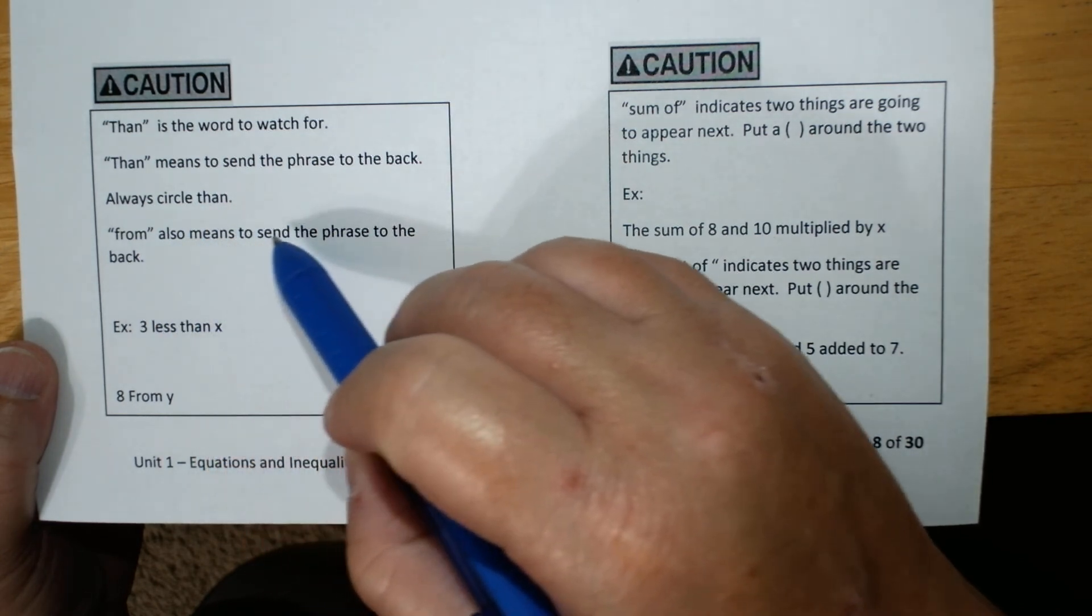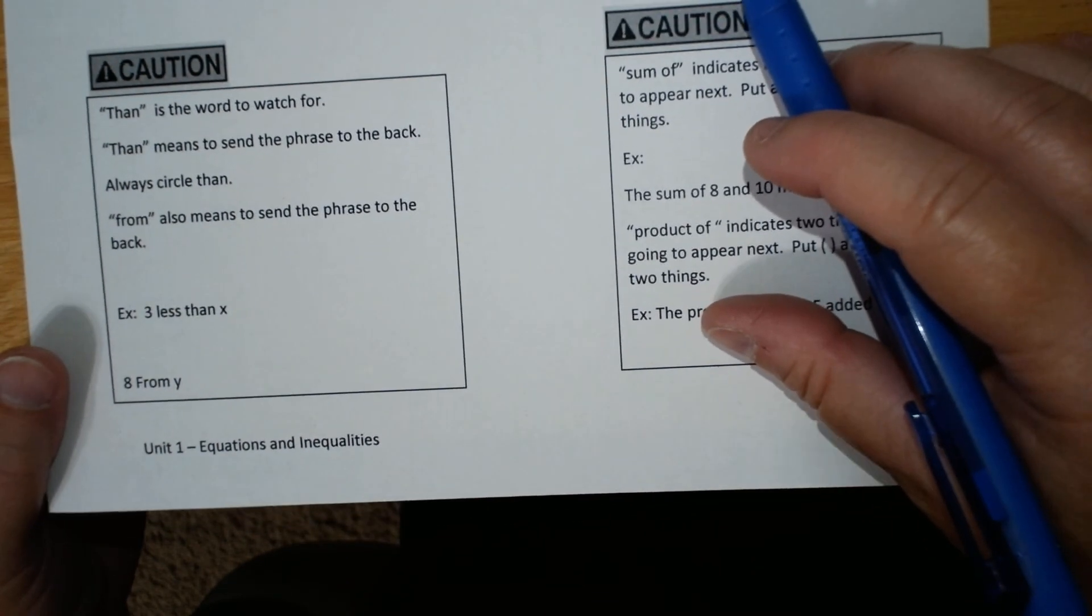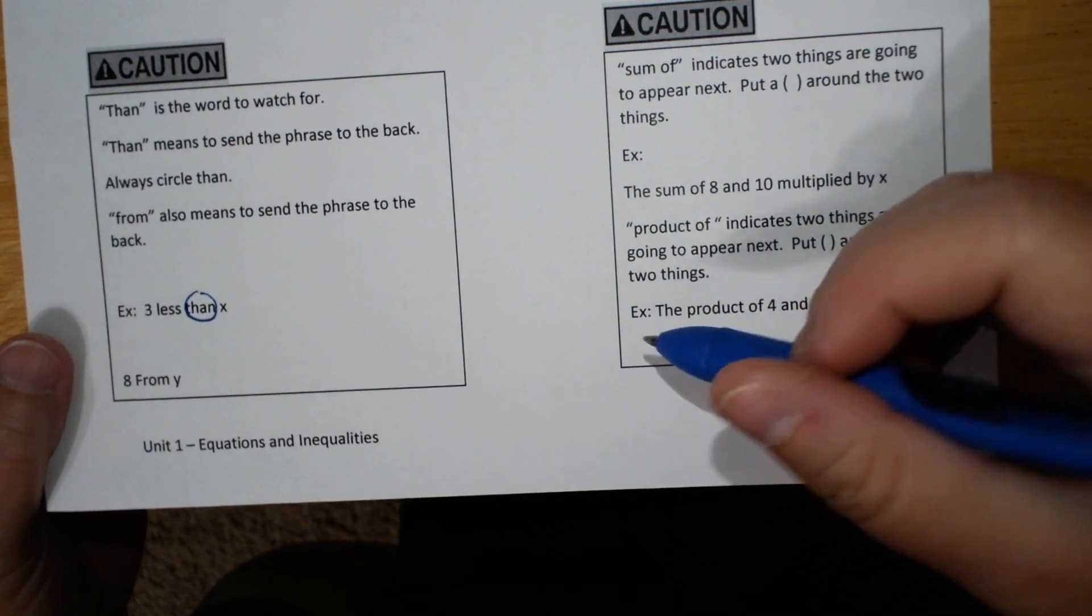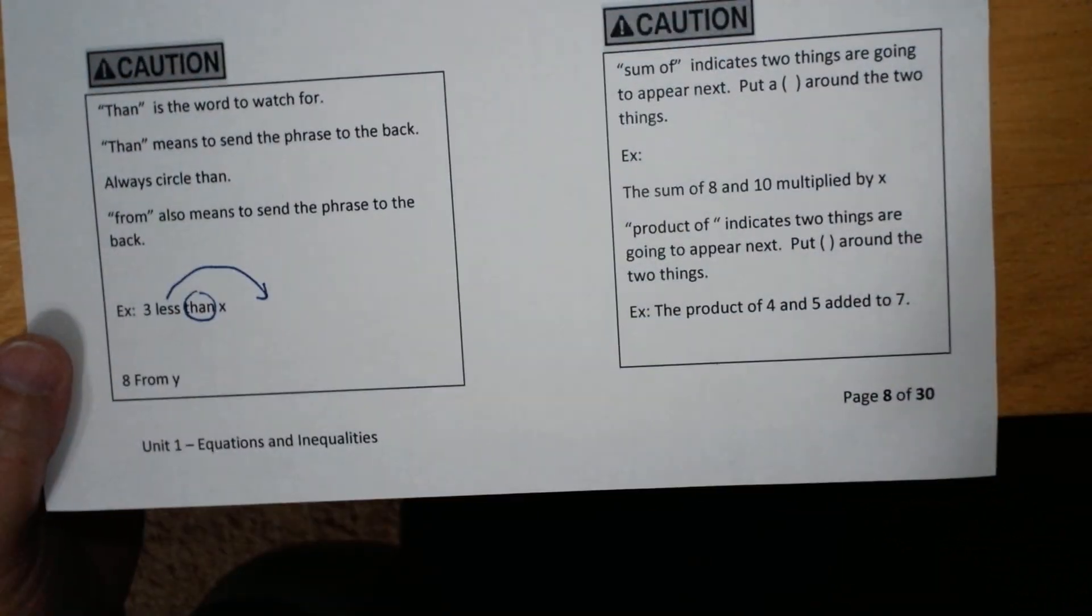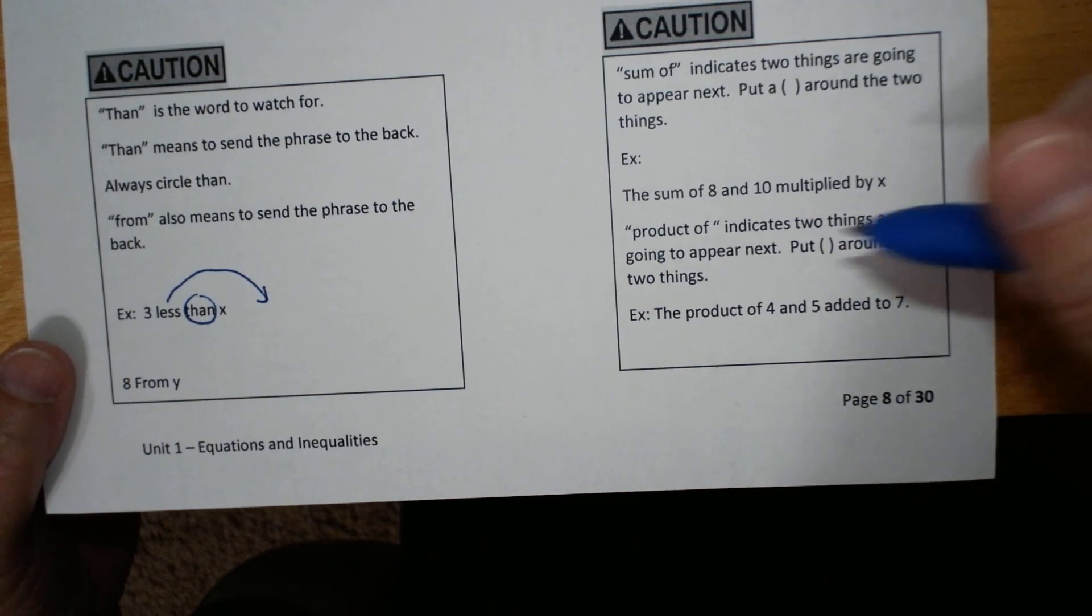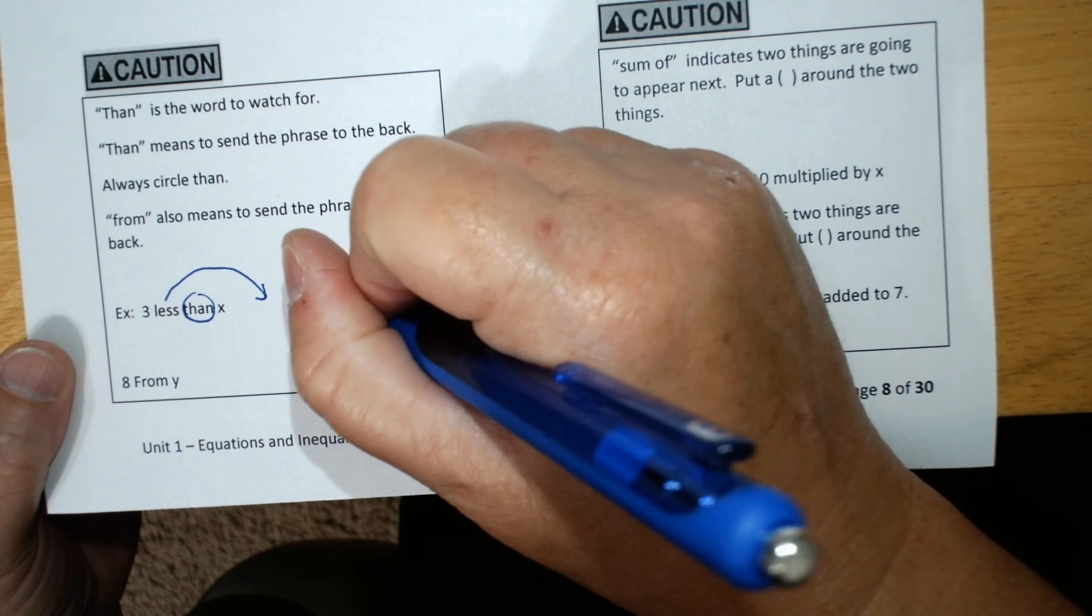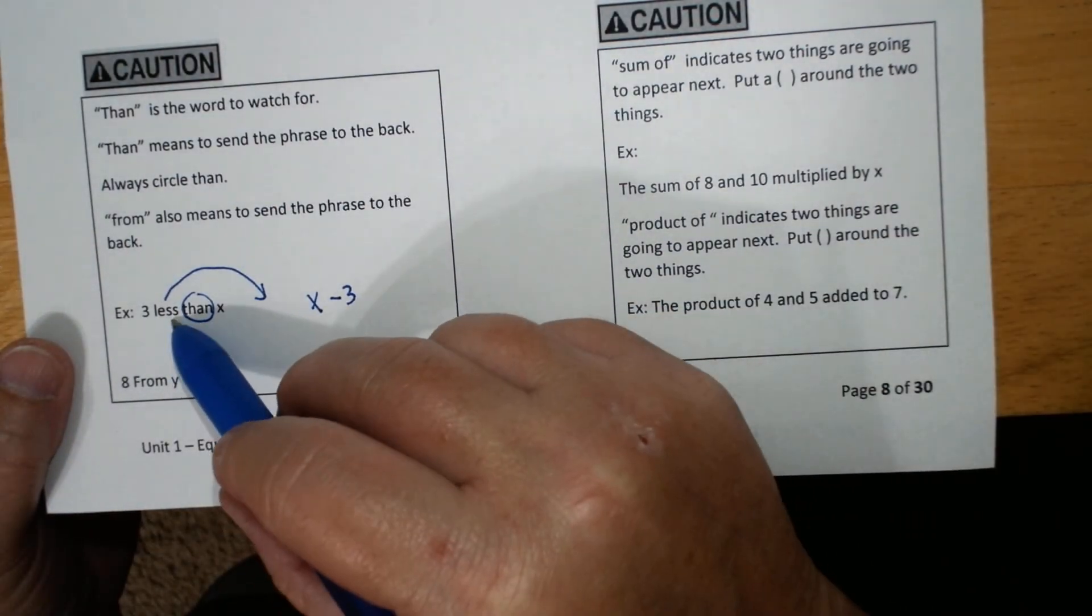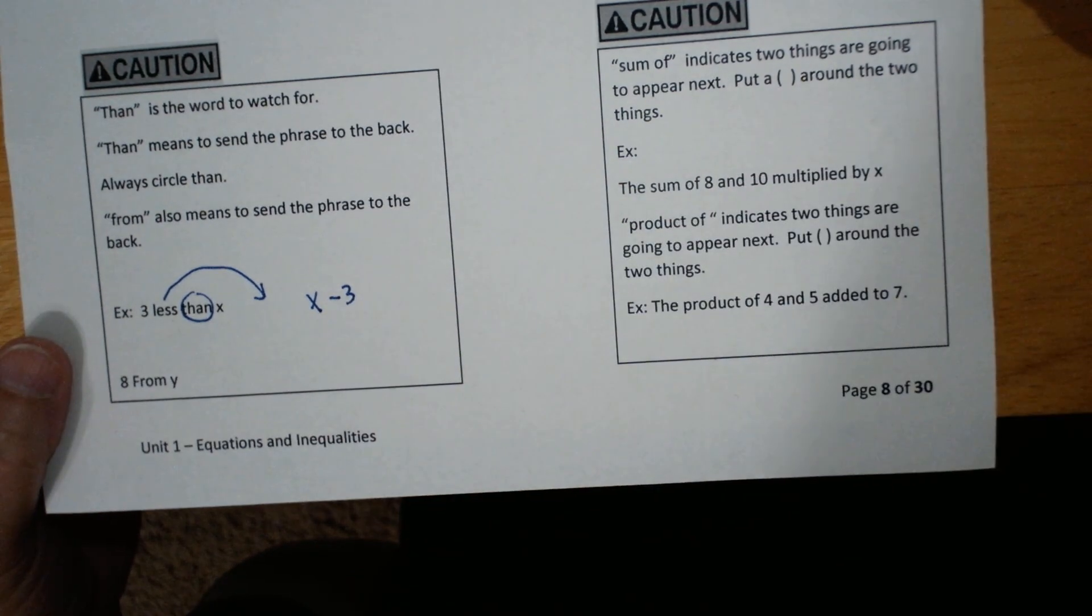From also means send the phrase to the back. You don't see from as much. So, three less than X. I'm going to circle it. The phrase that comes before it gets thrown to the back. So if I am going to write that, that is X minus three. Because the less is minus, this is X minus three. That is the phrase.